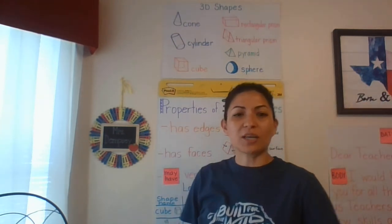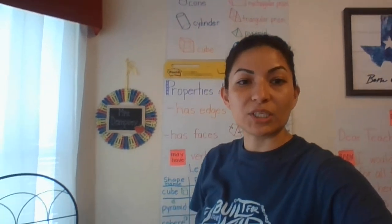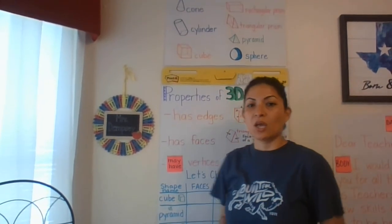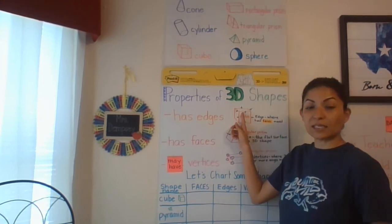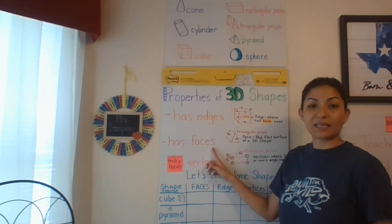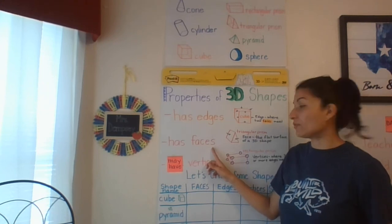So now we're going to talk about what makes a 3D shape a 3D shape. Those are the properties. So 3D shapes will have edges. That's where flat surfaces meet. It'll also have faces. Another word for those flat surfaces.